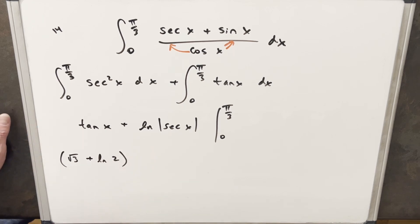And of course I can drop the absolute value there. And then plugging 0 in, tan at 0 is 0. I plug 0 in here, secant at 0 is just 1. Natural log of 1 is 0. So this piece goes away.